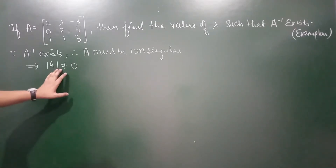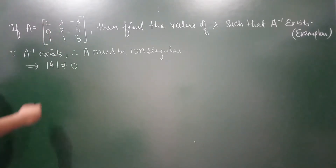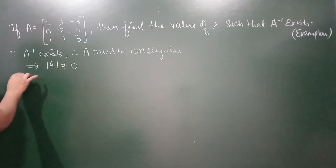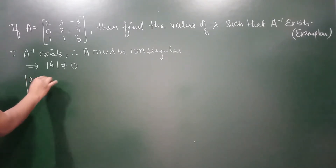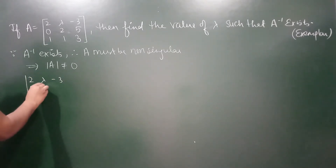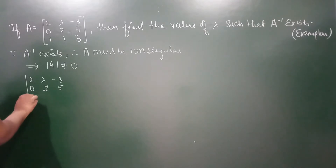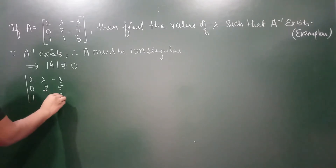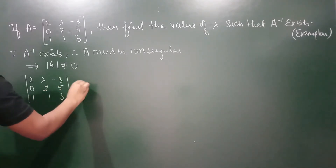इस property का हम इस्तिमाल करेंगे और lambda की values को निकालने की कोशिश करेंगे. इसका मतलब हो गया determinant of the matrix with entries 2, lambda, -3 in row 1; 0, 2, 5 in row 2; and 1, 1, 3 in row 3 should not be equal to 0.